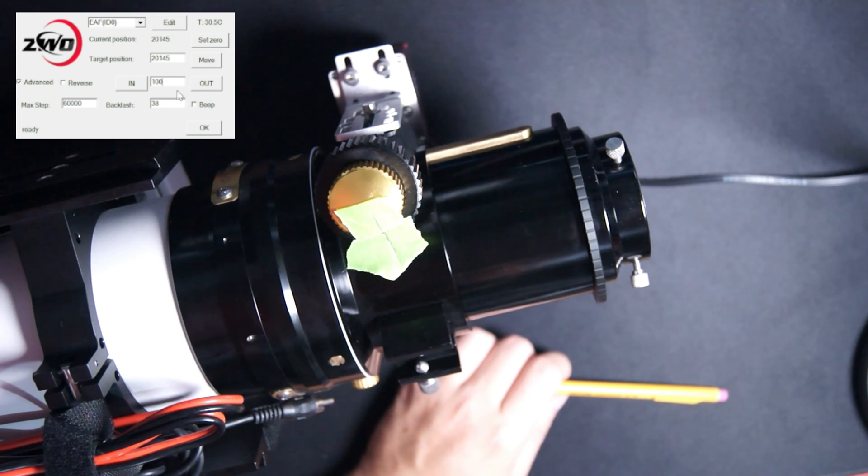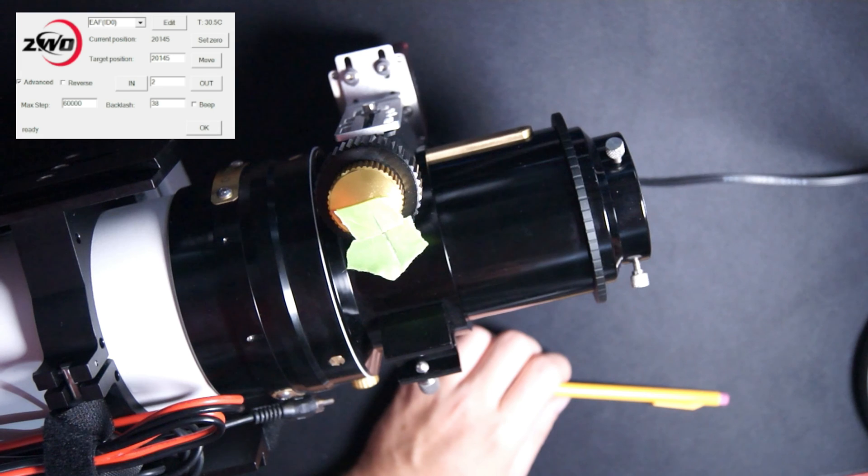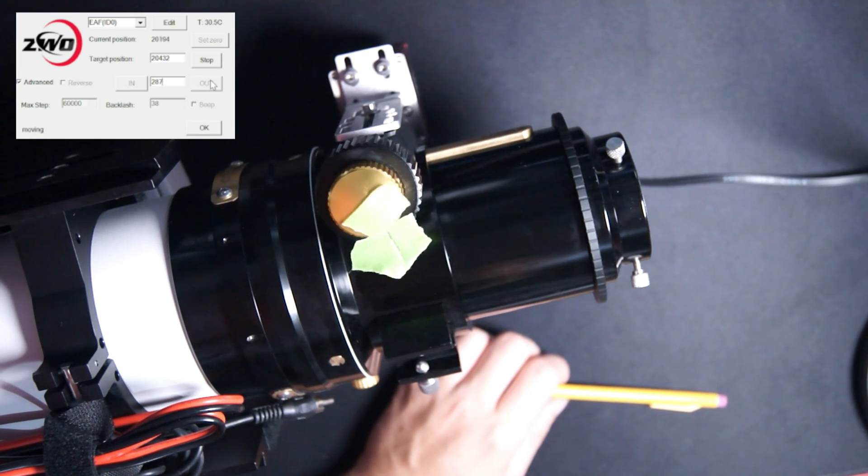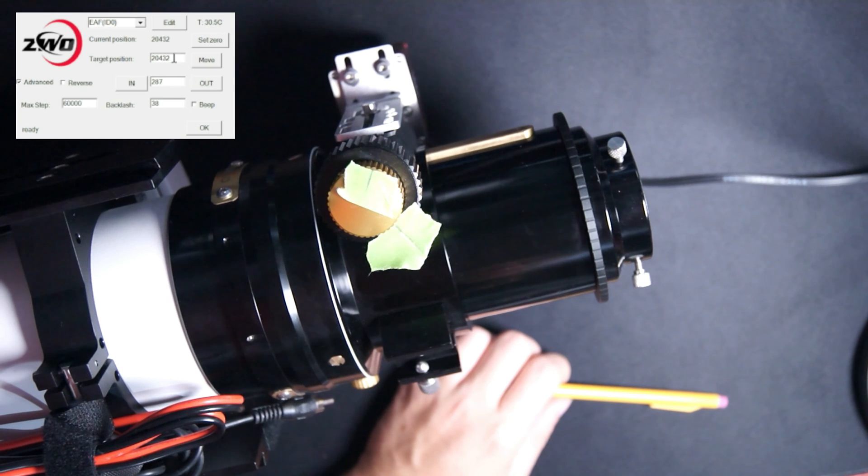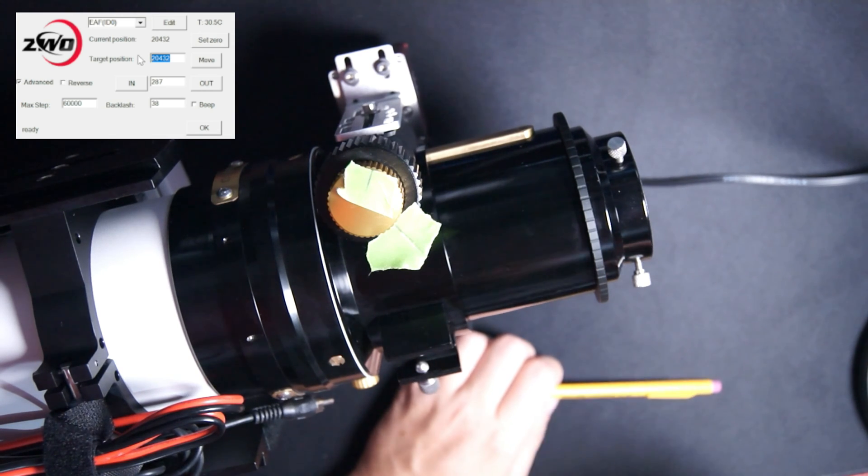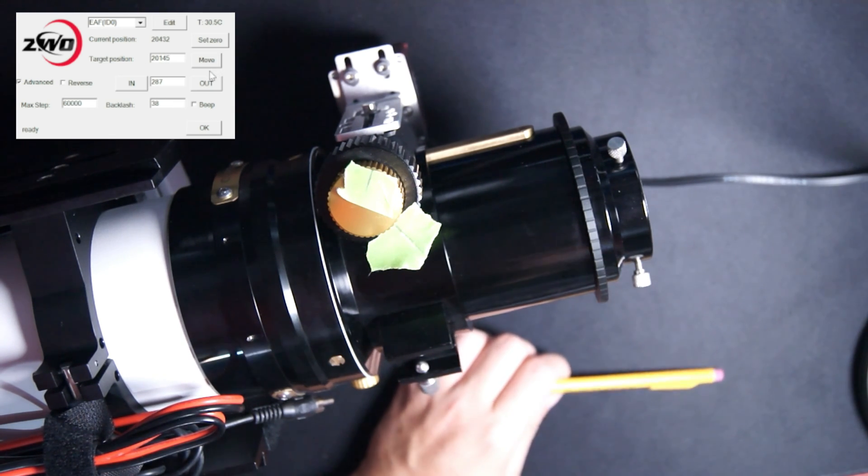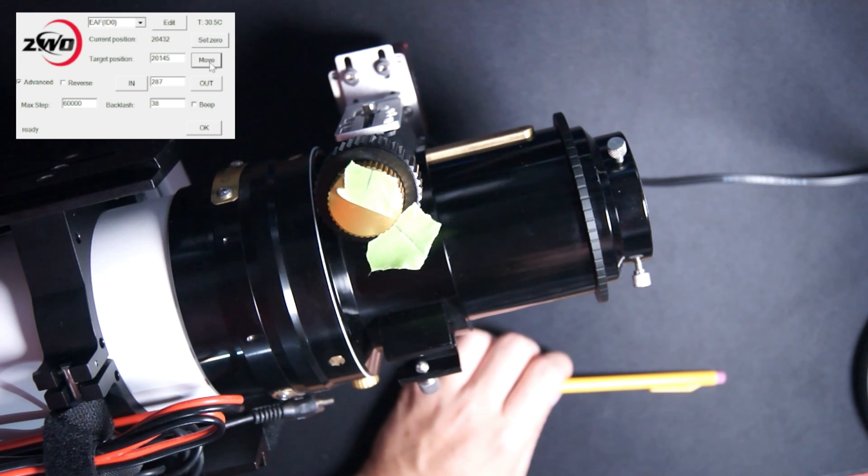So instead of just going in and out a set number of steps, let's try a random number, let's say 287 steps. We'll go ahead and move it out. Now we want to go back to where we started, which is our original current position of 20,145. In this case, yours is going to be a little bit different. And we're going to tell it to move to that position.